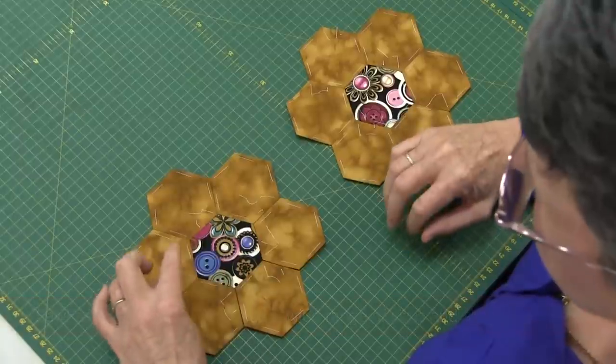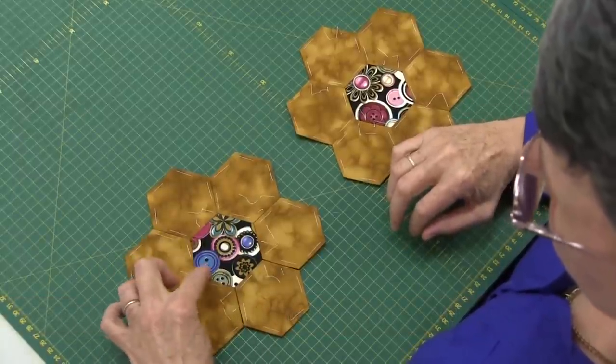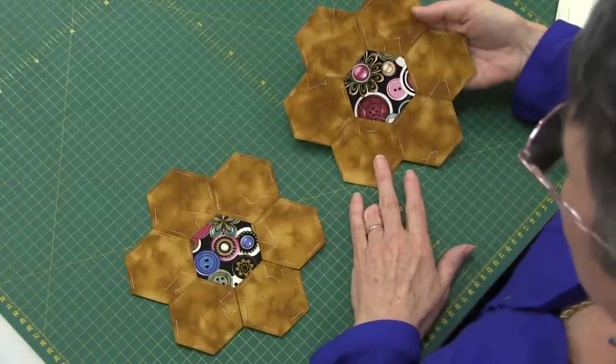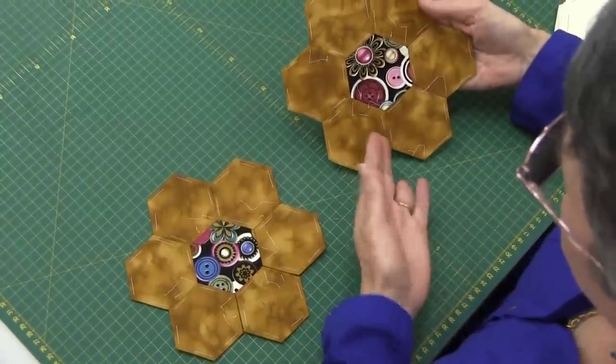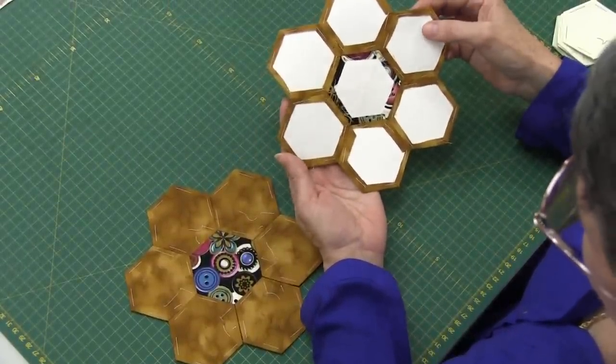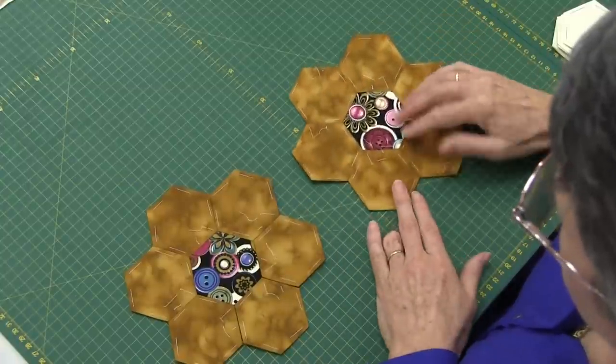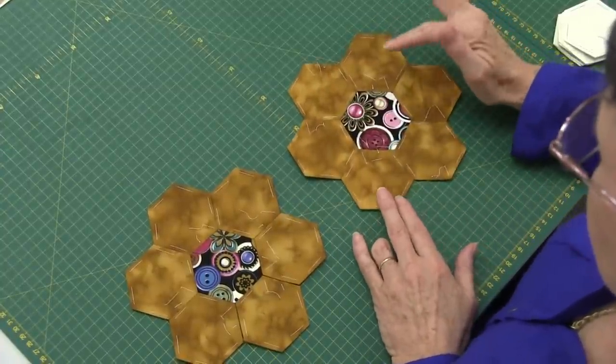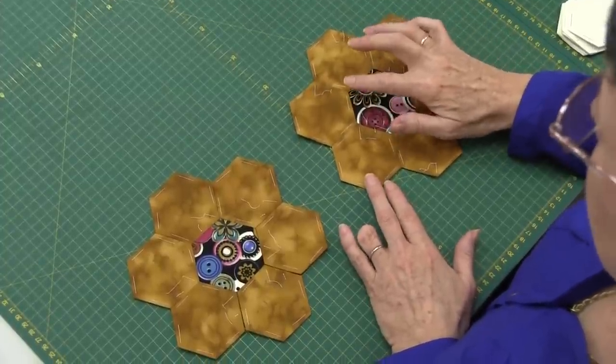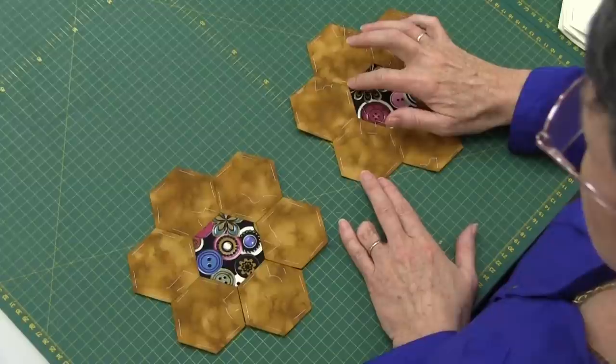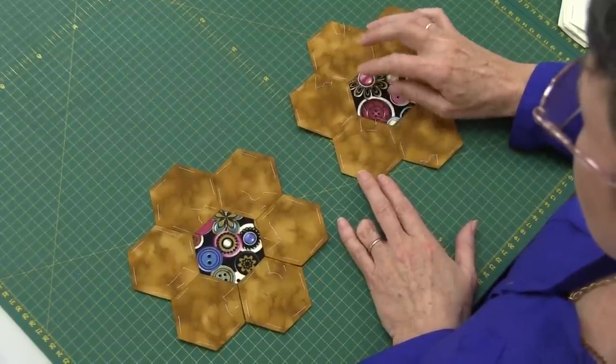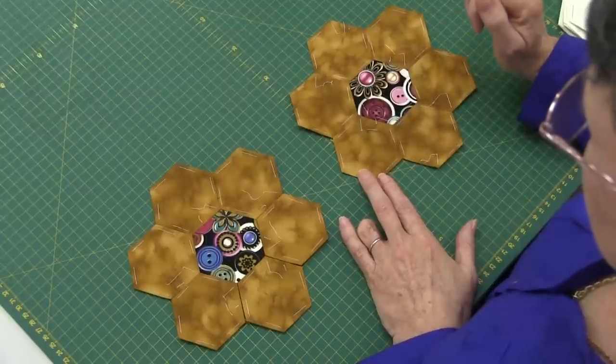When we've continued sewing all our lines going to the outside, this is what your shape ends up like. There it is on the back, showing you that it's all connected and all the stitching. By using the same color thread and being careful and only taking your two to three threads with each shape, you don't see any stitching in between.